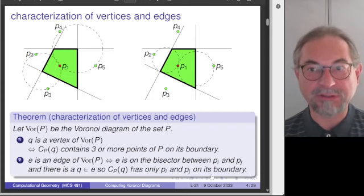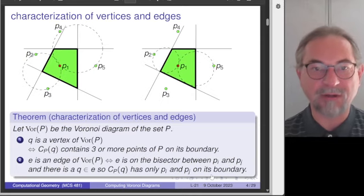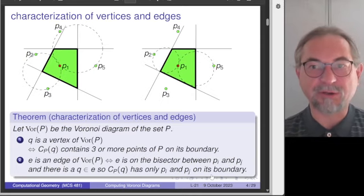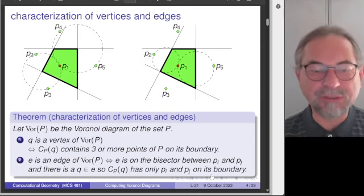The theorem from the previous lecture formalizes these observations via the definition of the largest empty circle centered at point Q. Q is a vertex if three or more points are involved; it lies on an edge if only two points are involved. We will use this characterization of a Voronoi vertex via this circle construction.